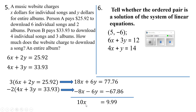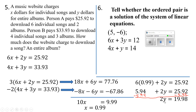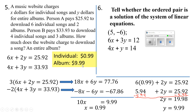Dividing by 10 gives x equals $0.99, so individual songs cost 99 cents. Now I'll plug that into the first equation: 6 times $0.99 is $5.94. Subtracting $5.94 from both sides of 2y plus 5.94 equals 25.92 gives 2y equals $19.98. Dividing by 2 gives y equals $9.99. So albums are $9.99 and individual songs are $0.99.